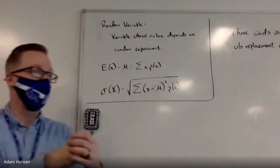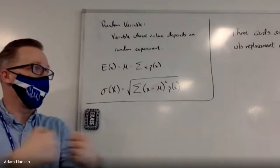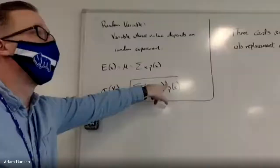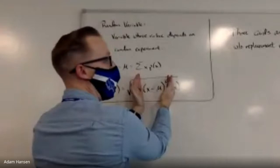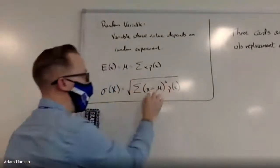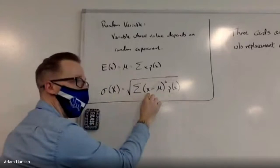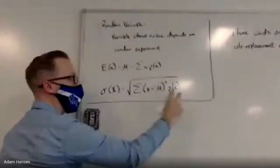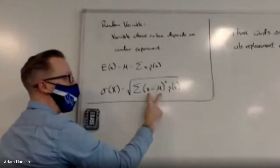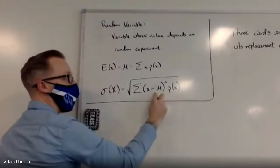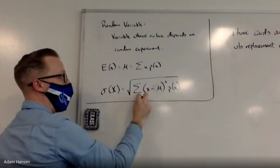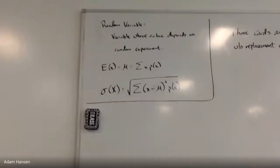Some of the differences are positive and some are negative, and if I add them up they cancel out. The quantity x minus mu, squared, represents the variability for a single outcome. To get the variability for the full distribution, I multiply that squared difference times the probability of that outcome occurring, sum all of those products, then take the square root to get our answer.